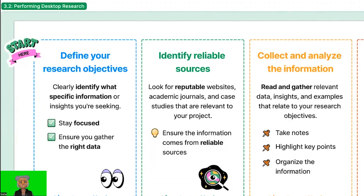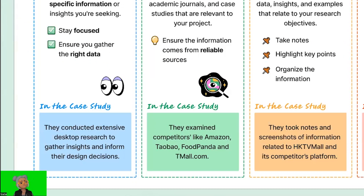Step 1: Define your research objectives. Clearly identify what specific information or insights you're seeking through your desktop research. This will help you stay focused and ensure you gather the right data. In the case study, they want to find out ways HKTV Mall can improve their user experience, so they conducted extensive desktop research to gather insights and make informed design decisions.